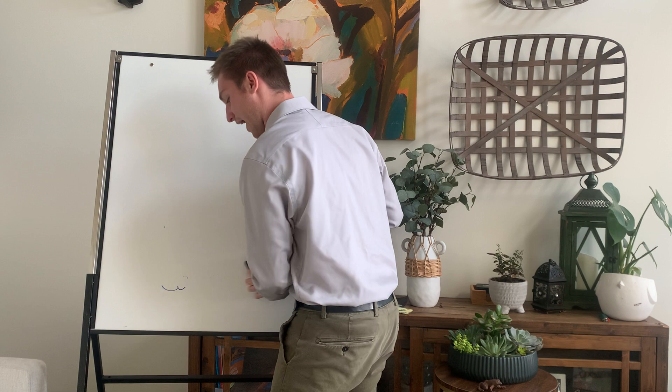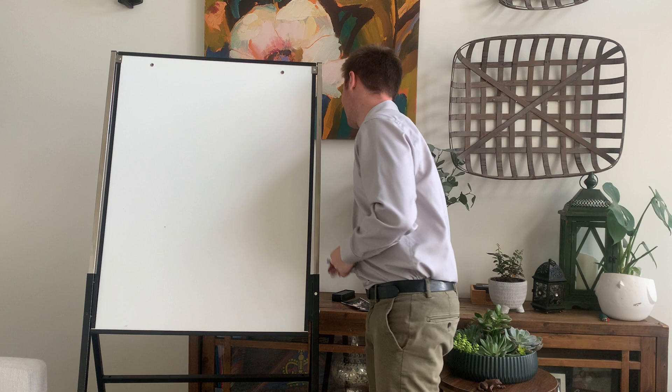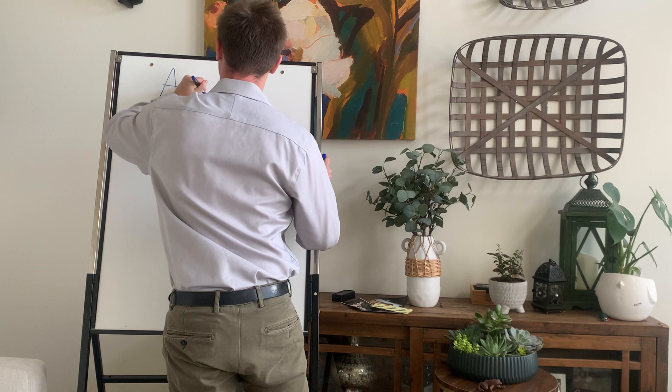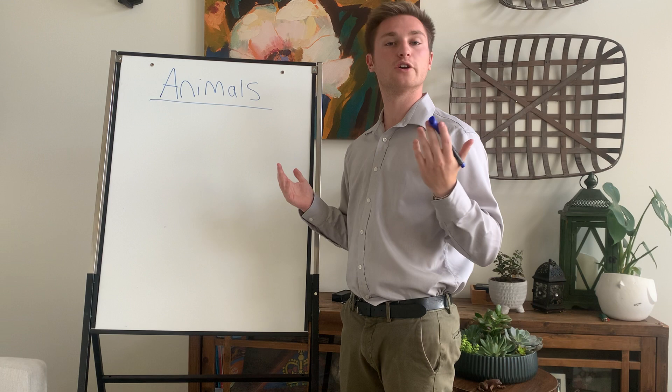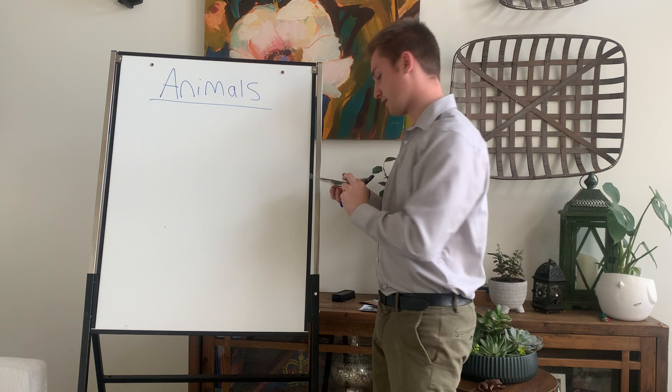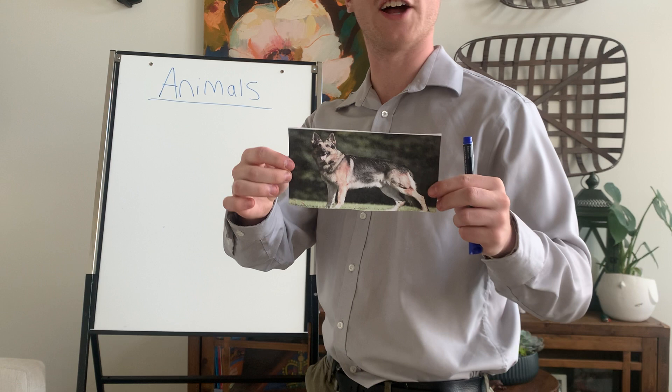Actually, I can hear an animal now — that is the sound of a cat. There are, of course, many animals in English. We will only look at a few basic ones today. Here is an example. In English, we call this a dog. D-O-G. Dog.